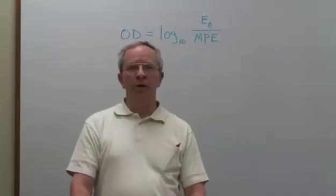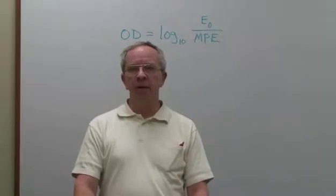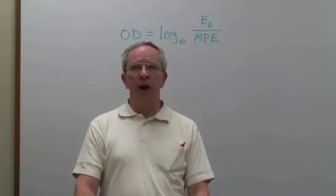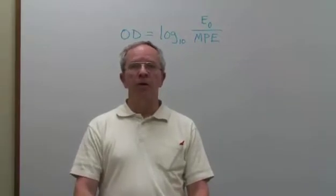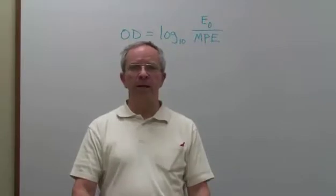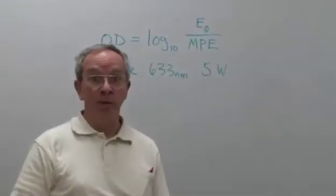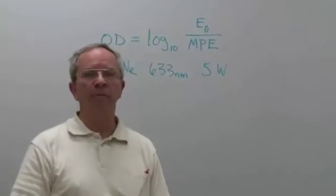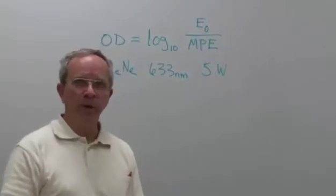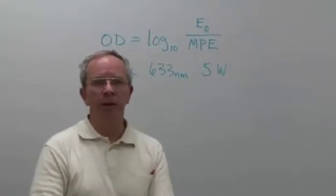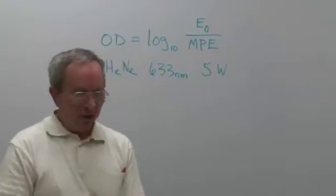You're primarily going to be using the formula to calculate the minimum optical density required for eye protection while you're working with lasers in your lab. We're going to choose, for our example, a 5 watt helium neon laser. That's a pretty big laser, but if we can protect ourselves from a 5 watt laser, we'll be doing pretty good against probably anything that we can encounter in our lab.